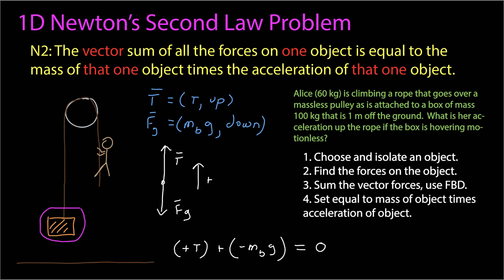So I set these forces, the sum of these forces equal to the mass of the object times the acceleration of that object. But I was told that this object is motionless, so its acceleration is zero. So this sum is equal to zero.